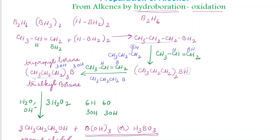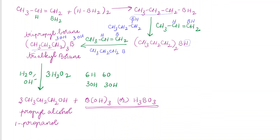This preparation of alcohol from alkene by hydroboration and oxidation involves two types of reaction: one is hydroboration, which is the addition of diborane to alkene, followed by oxidation done by hydrogen peroxide in the presence of aqueous sodium hydroxide. I hope this video is very useful for you. If you like this video, please like, comment, share, and subscribe to the channel for more videos. Thank you.